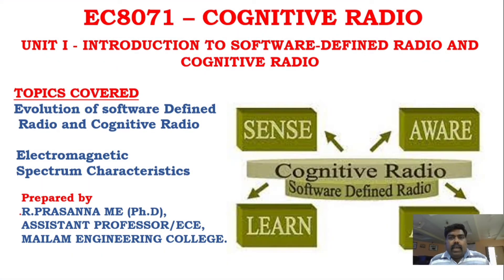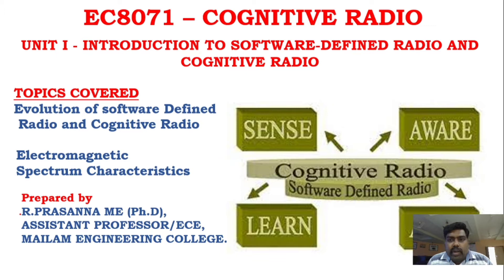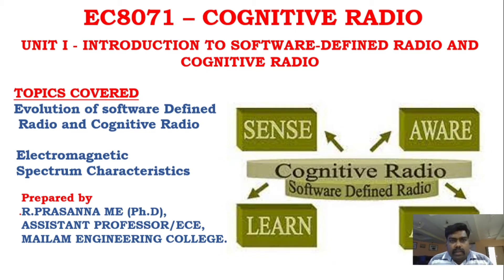Good afternoon students. In today's class we are going to see unit number one — the evolution of SDR and cognitive radio. The topics in the first unit are fully theory related: SDR evolution, cognitive radio evolution, spectrum characteristics, and comparison with other radio technologies.